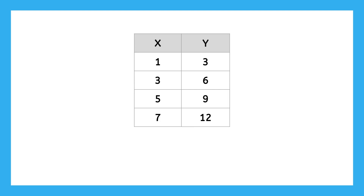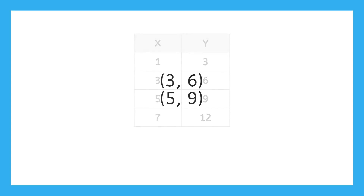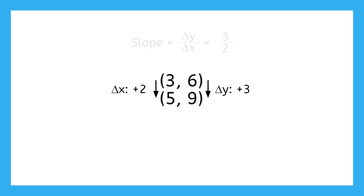We've already learned how to find slope between two points. We just pick two points out of a table, find the change in y and the change in x, and then divide — change in y over change in x. If we had a graph, we'd pick two points and find rise over run. The only part that will be new in this lesson is that the questions will look a little different and we'll use a slightly different version of the same slope formula.